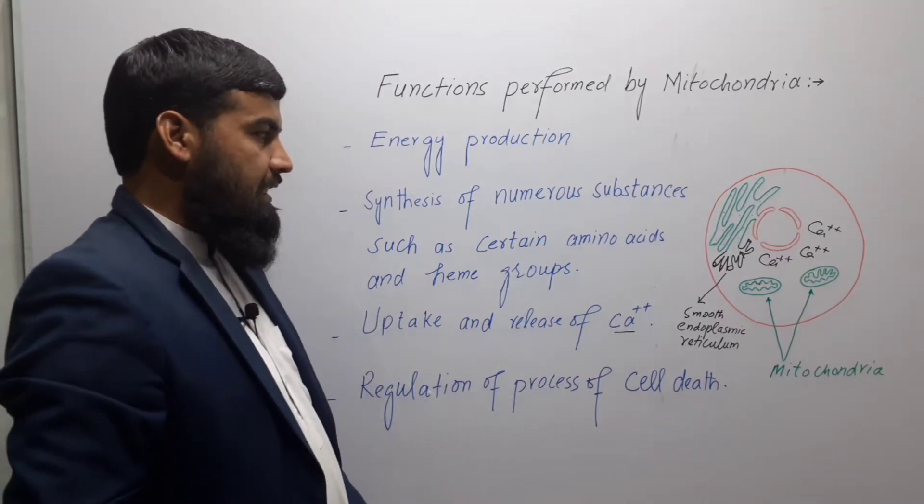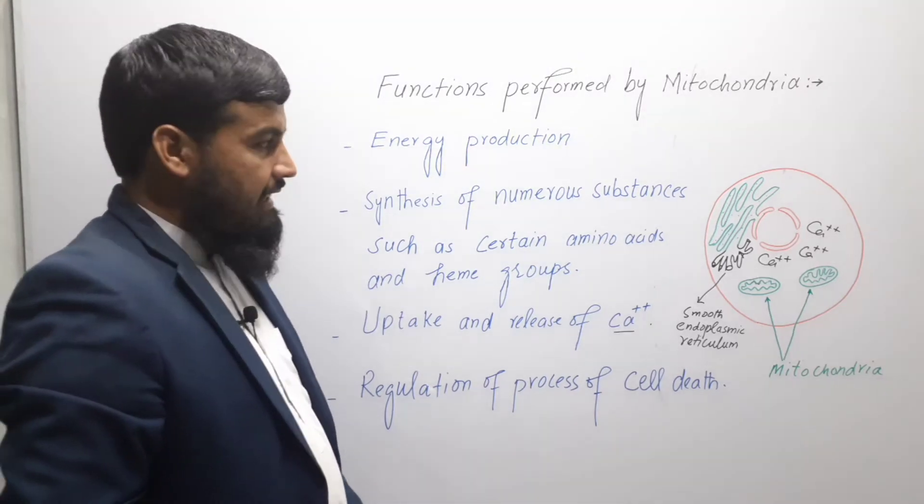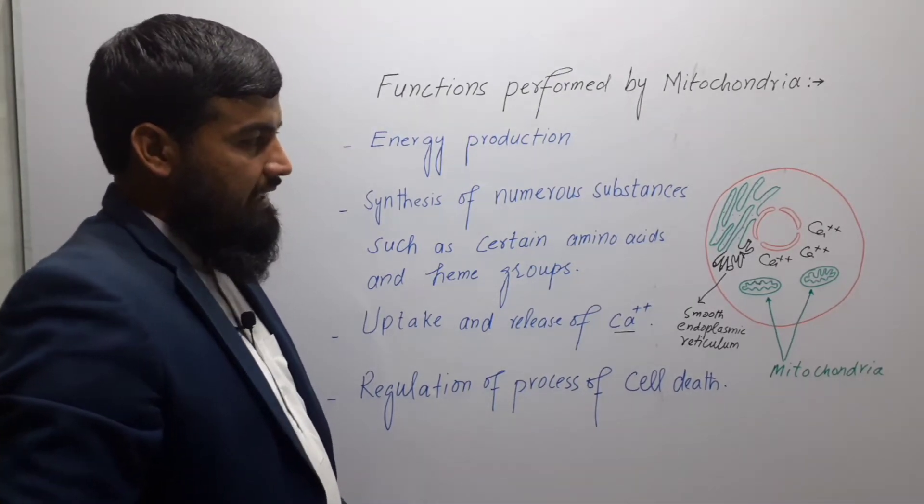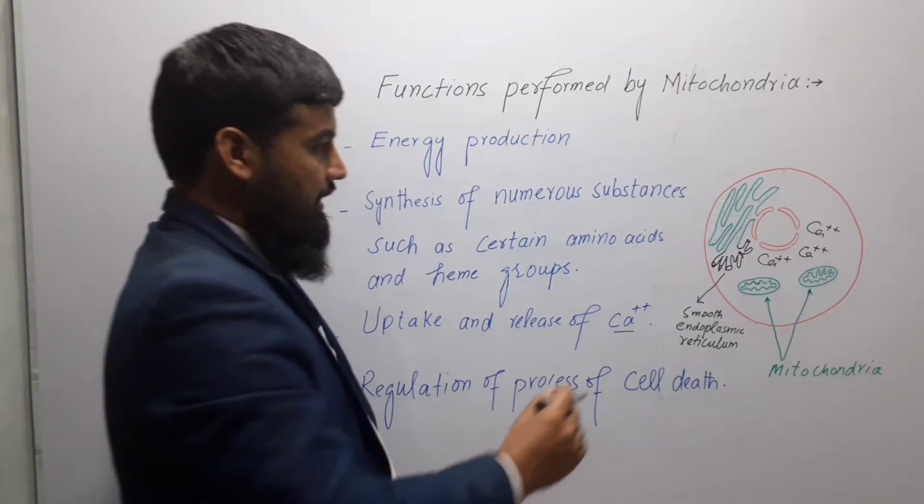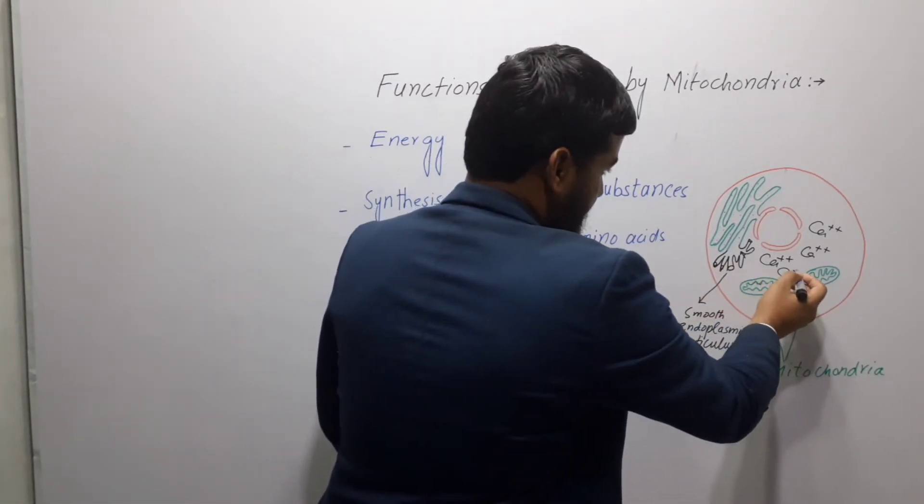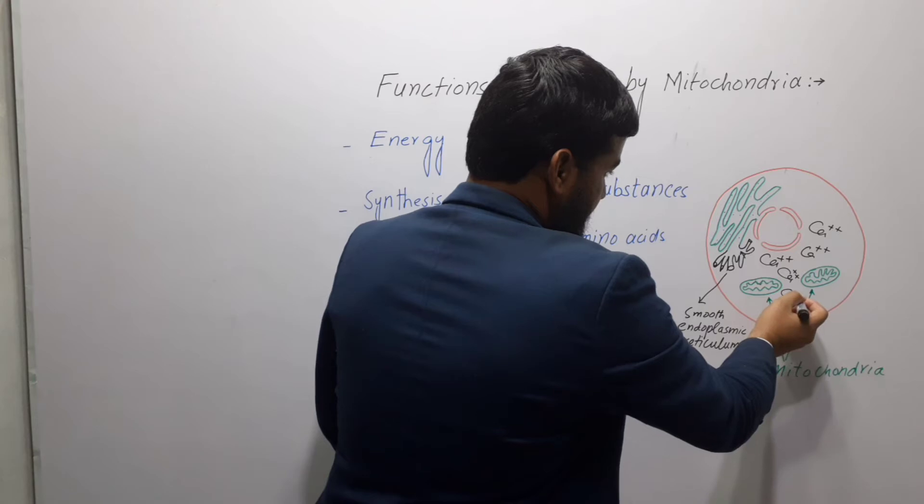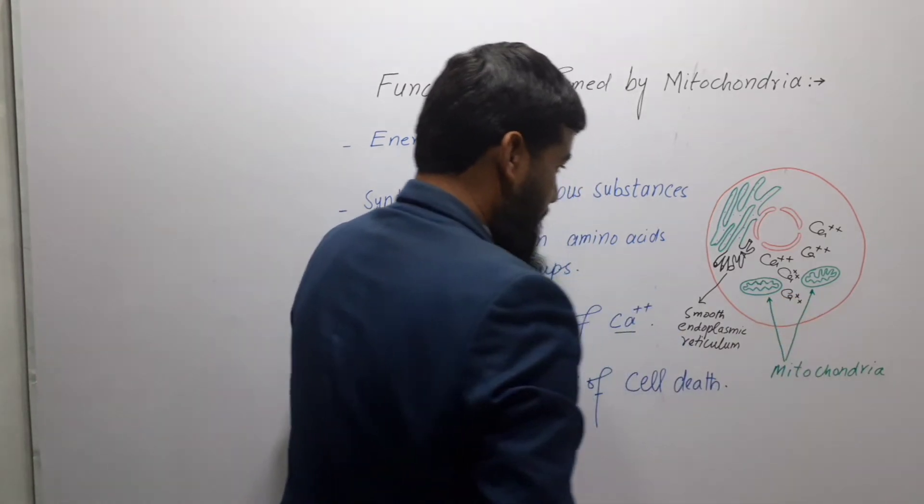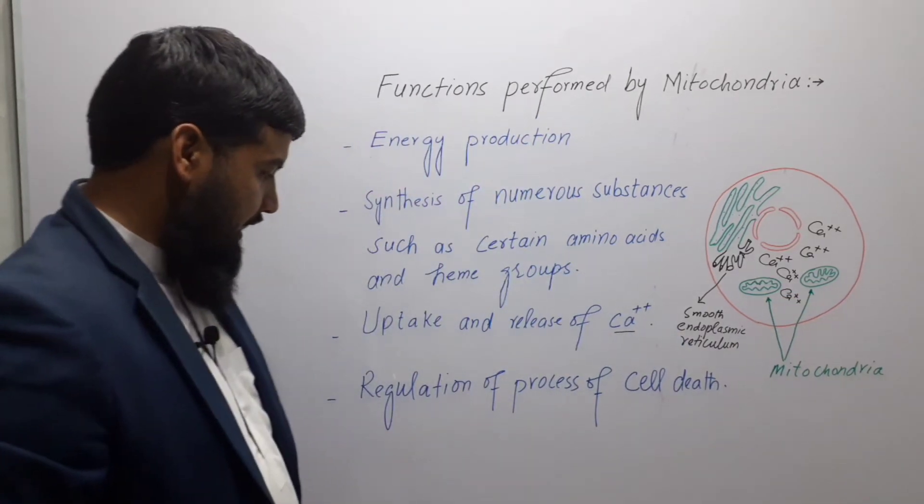Sometimes in the cell, the calcium ion level increases to a dangerous level, so such calcium ions are taken up by the smooth endoplasmic reticulum and mitochondria.